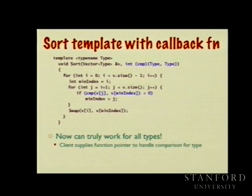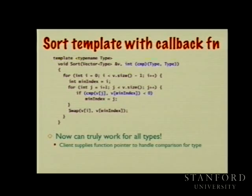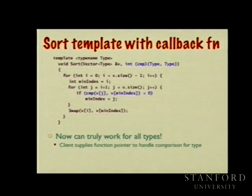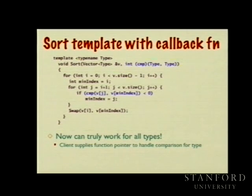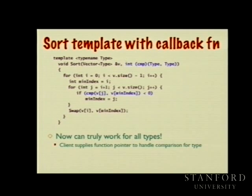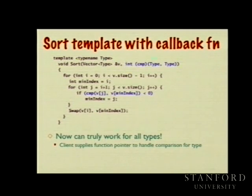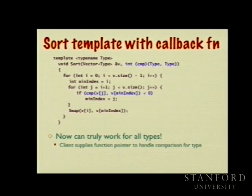This is the last slide we had shown on Friday — I had just blasted it up there and didn't really talk about it, so I'm going to talk about it now and finish the final adjustment. This is the selection sort code we worked to templatize into a template function that will sort vectors of unknown type.